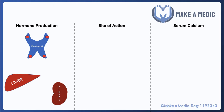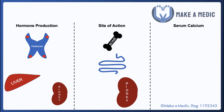The hormones that regulate calcium homeostasis mainly come from either the parathyroid gland or they're activated within the liver and the kidneys. Regarding the site of action, bone is the main store of calcium within the body, so it can be liberated from the stores in the bone. The GI tract is important in absorbing calcium from our diet, and the kidneys have a role in excreting calcium.